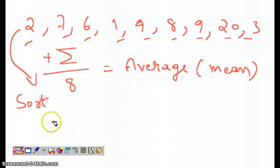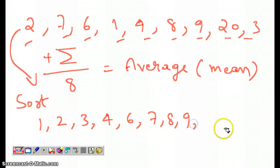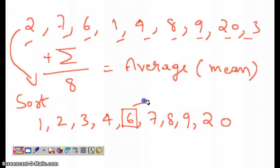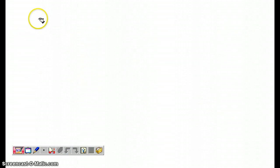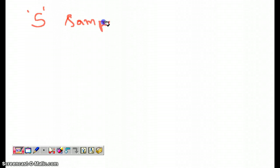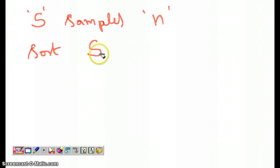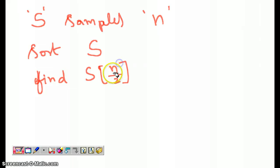The sorted version of those numbers is 1, 2, 3, 4, 5, 6, 7, 8, 9, 20. The middle number is called the median. So given samples S of size n, you sort S and then find the element at position n/2.